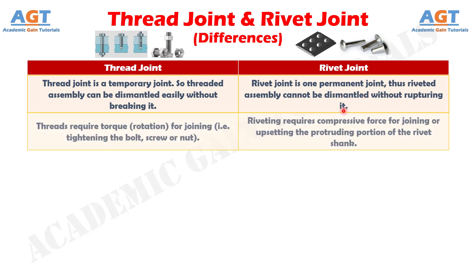Number two: threads require torque or rotation for joining — that is, during tightening of the bolt, screw, or nut — whereas riveting requires compressive force for joining or upsetting the protruding portion of the rivet shank.